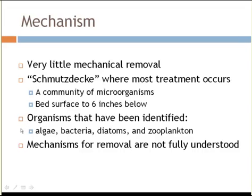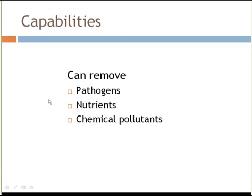There's quite a bit of research that has been done on trying to identify the organisms responsible for the treatment. Researchers have found algae, different types of bacteria, diatoms, and zooplankton that comprise those communities, but the mechanisms of how the purification and treatment work haven't been fully described yet. Research on slow sand filters has focused mainly on developing drinking water, focusing on human pathogens. There is a report that they do remove nutrients, although they're not as efficient as constructed wetlands in doing that, and they do remove a large range of chemical pollutants.